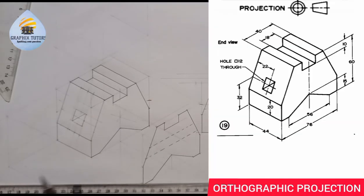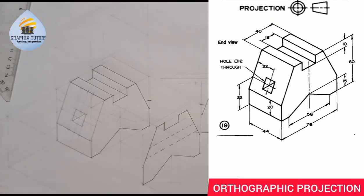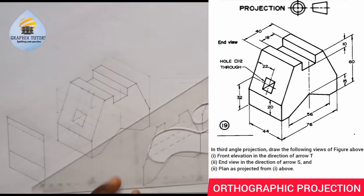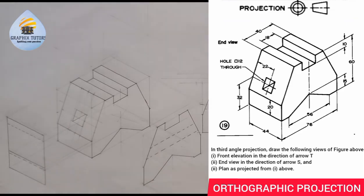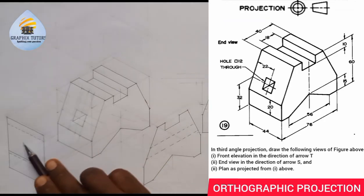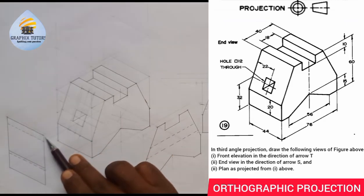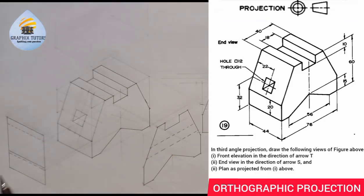The next thing is looking at our end view. We should draw the end view in the direction of X - this side here. So if you are looking at this side, what will you see? Let's see what we are going to see by looking at this side.